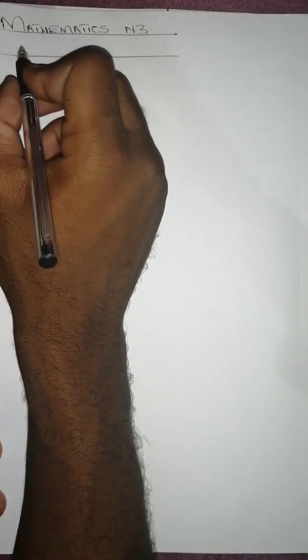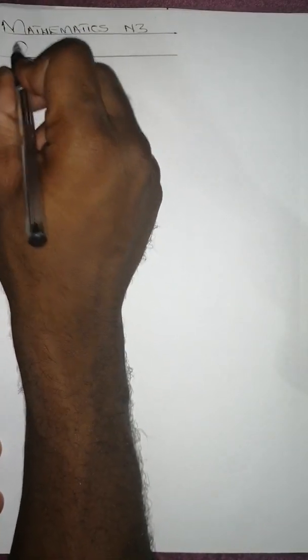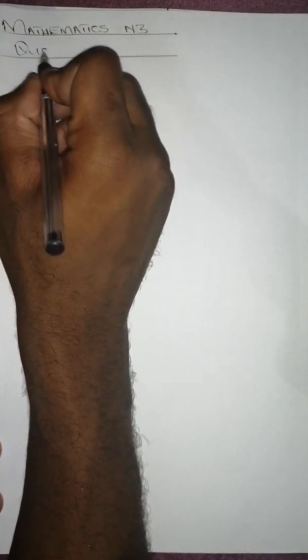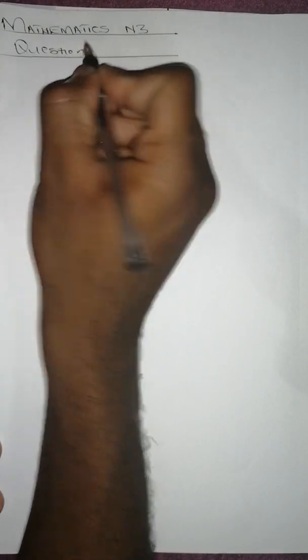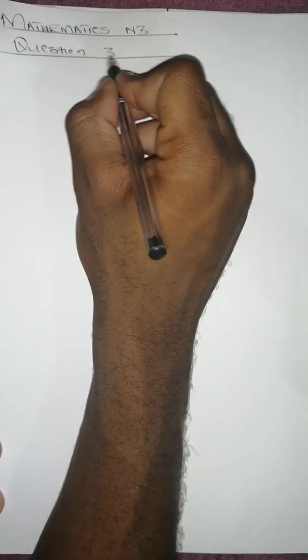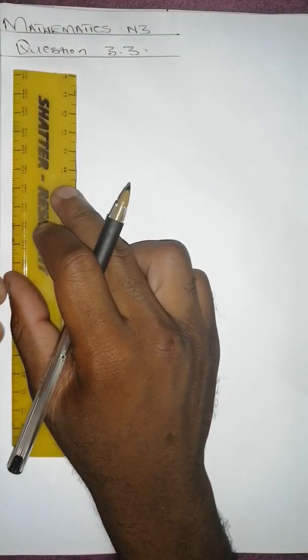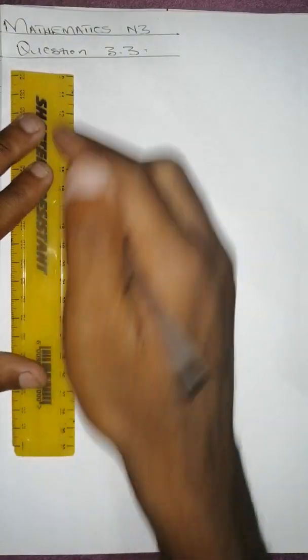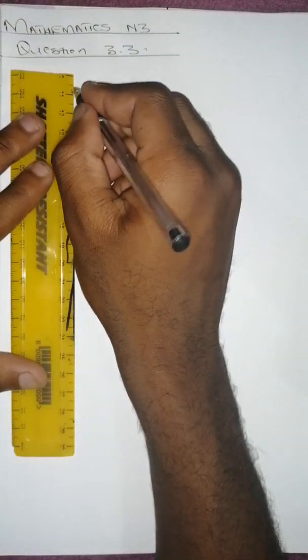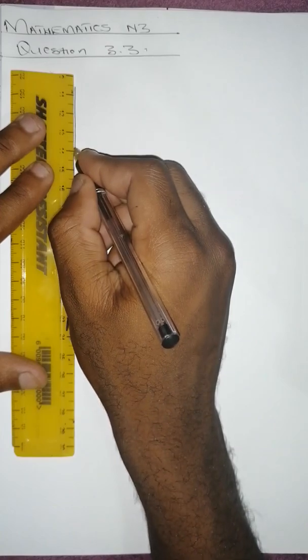For question 3.3, since we are given the ratios of a triangle, we have to draw those triangles. The first angle is a and the second angle is b.